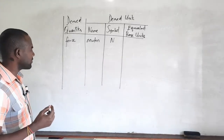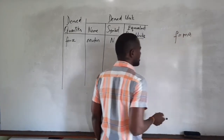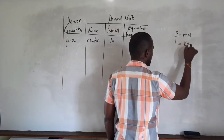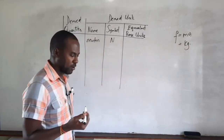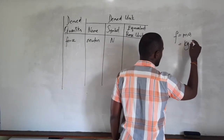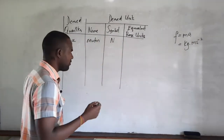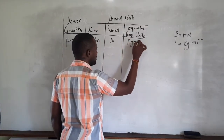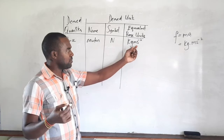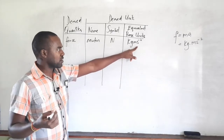To arrive at the base unit equivalent of the newton, we go back to the equation for force: force equals mass times acceleration. Mass is a base quantity with unit kilogram, and acceleration has units of meter per second squared. Therefore the newton is equivalent to kilogram meter per second squared, and vice versa.